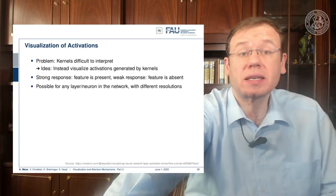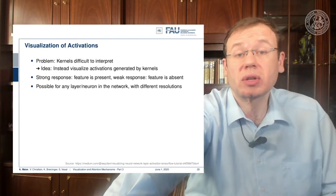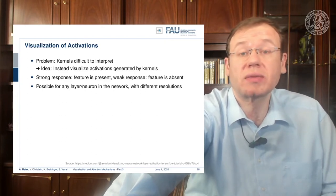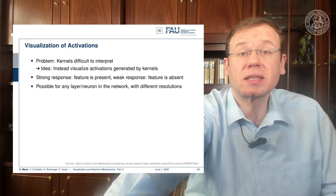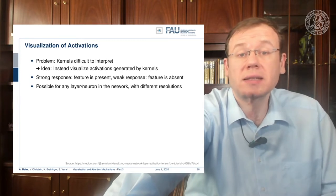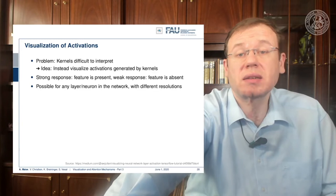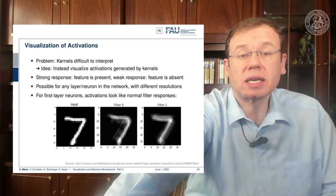So we need some different ideas. One idea is to visualize the activations. The kernels are difficult to interpret, so we look at the activations generated by the kernels because they tell us what the network is computing from a specific input. If you have a strong response it probably means the feature is present; if you have a weaker response the feature is probably absent.